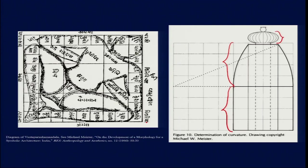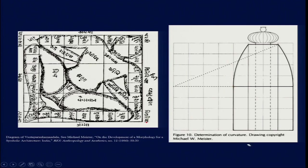On top of the shikara we have the corbelled stone called the amalaka, which marks the space of the axis mundi. On top of that we usually find a kalasha or finial. The kalasha is a marker of life and relates to the idea of creation — it is used in most Hindu rituals from birth to marriage to death and everything else, bringing together all these symbols.